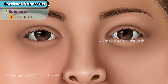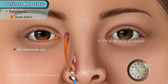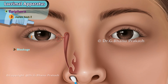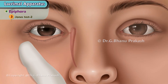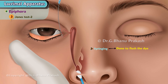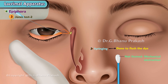3. Jones test: There are two Jones tests. Jones test 1: 2% fluorescein dye drops are put in the eye and a cotton bud is placed at the inferior meatus for 5 minutes. If the pathway is patent, the bud gets stained. In case of blockage, Jones test 1 is negative and Jones test 2 must be done. Jones test 2: Syringing is done to flush the dye and the bud is awaited to be stained. If the bud gets stained, pump failure is diagnosed. If the bud doesn't get stained, mechanical obstruction is diagnosed.